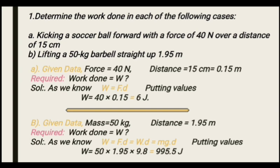Part B: given data — mass is 50 kg, distance is 1.95 meter. Required: work done. Solution: W equals F dot d. Here the force is the weight of the barbell, so W equals mg dot d. That is, W equals mass times gravitational acceleration times distance.